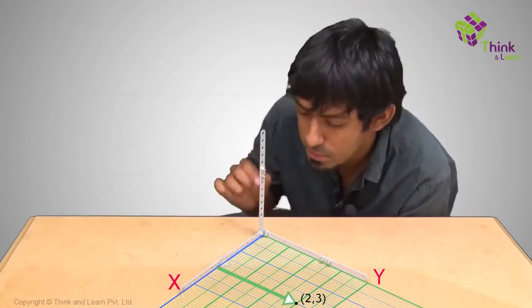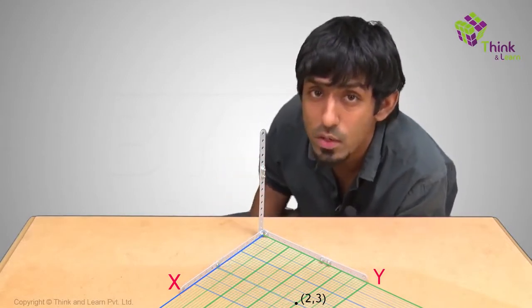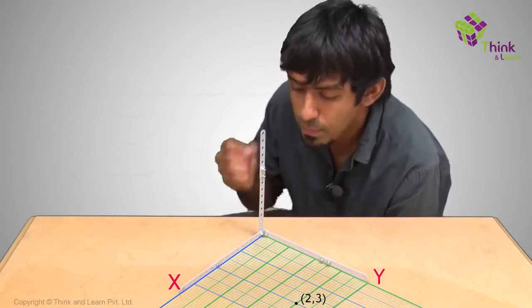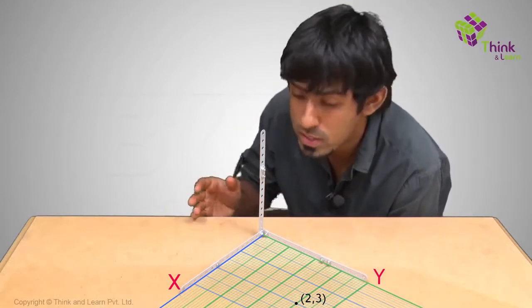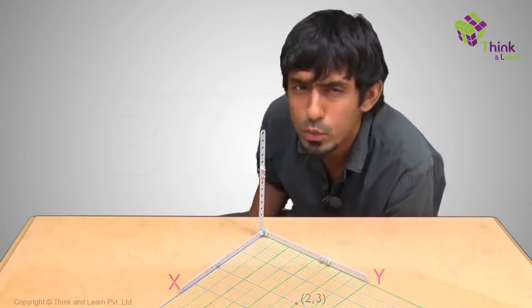Now I want to represent the same thing using the language of vectors. Why? Because I'm talking about vectors, I want to be able to talk about everything, including components in the language of vectors. Now how do I do that?